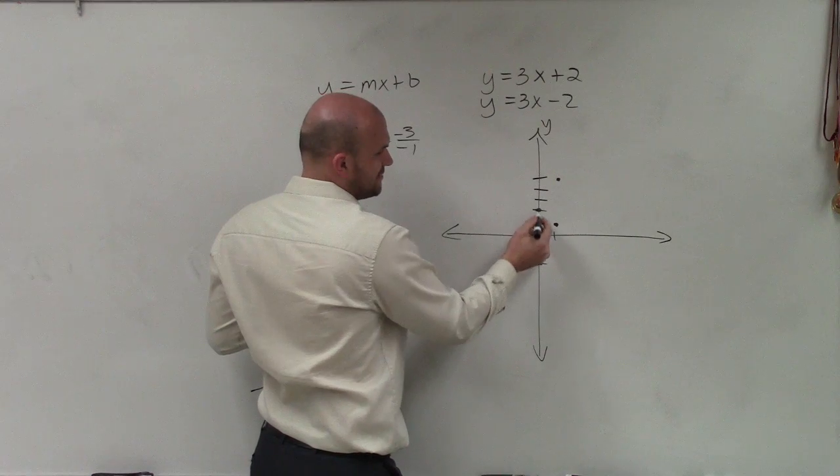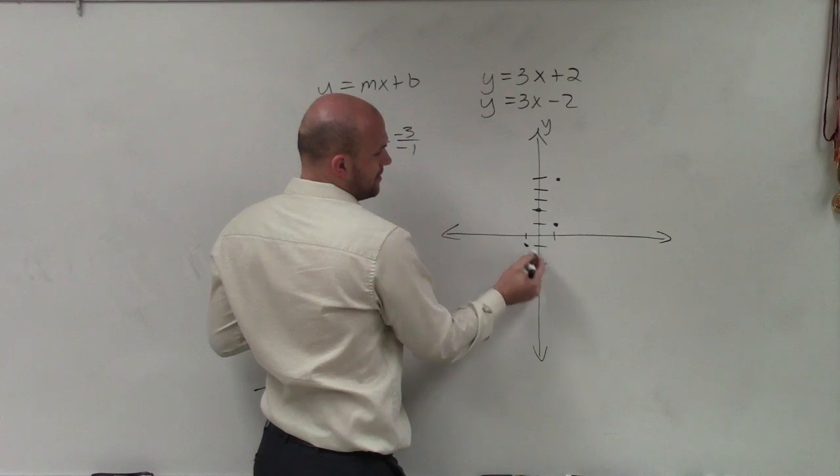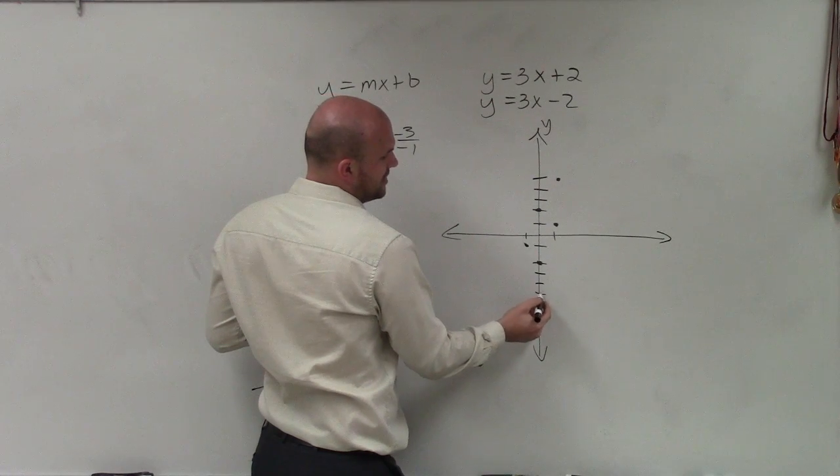Now, let's just go 1 in the negative direction from this initial point. 1, 2, 3, to the left 1. And then down 3, 1, 2, 3, to the left 1.